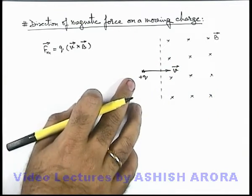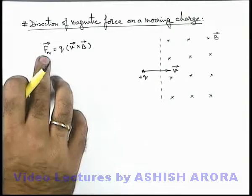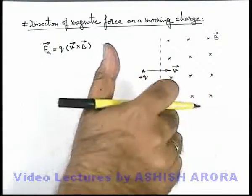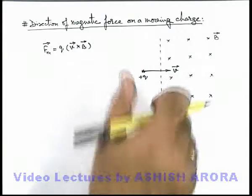So by using right-hand thumb rule we can find out the direction of this force vector. Here, if I rotate my right hand fingers from v vector to b vector you can see my thumb is pointing in upward direction.